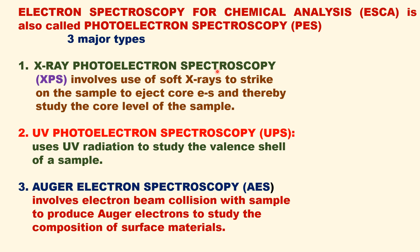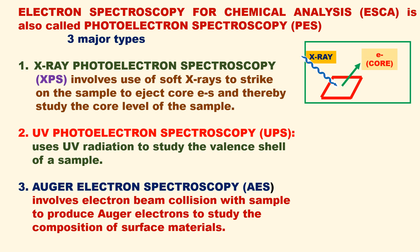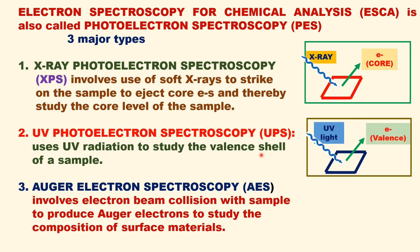There are three types of ESCA photoelectron spectroscopy. First, X-ray photoelectron spectroscopy, which uses soft X-rays to strike on the sample to eject core level electrons and thereby study the core level of the target. Second, UV photoelectron spectroscopy, in which UV light is shone on the sample, which ejects valence shell electrons — so it is used to study the valence band of the sample.